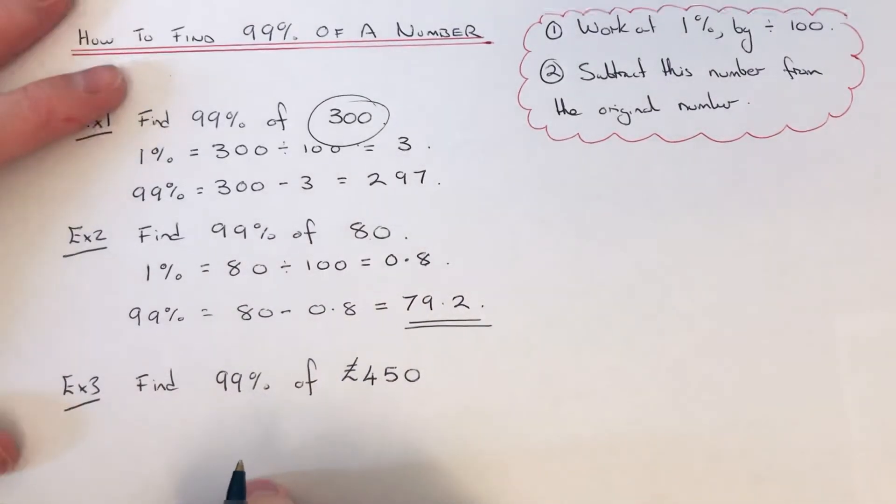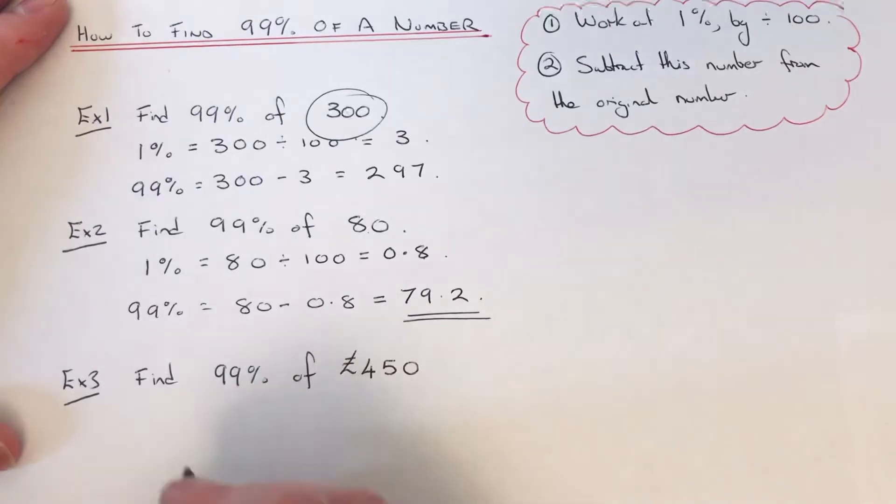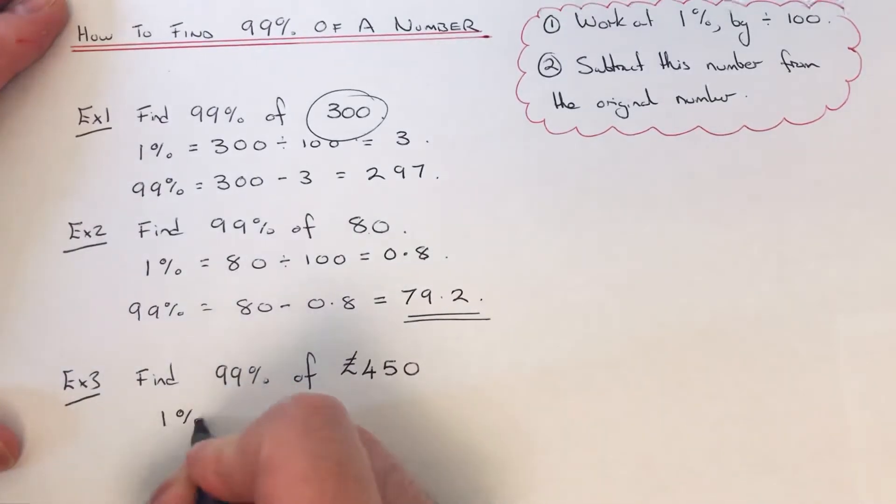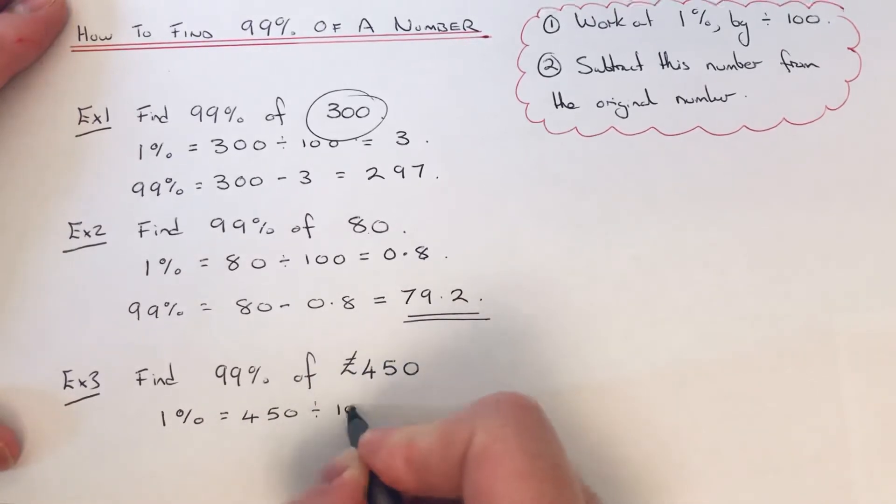So let's have a look at our third example. This time we've got to do 99% of 450 pounds. So again we work out 1% first of all, so we divide the 450 by 100.